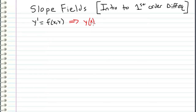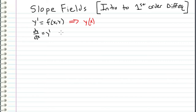Assuming you have a calculus background, y prime is really just a slope. Y prime is the same thing as dy/dx — the change of y with respect to x, or just the slope. In this lesson, we're not going to use calculus yet, but instead we're going to solve these first order equations graphically using what's called a slope field, which is basically just a plot of the slopes at any given point x, y.